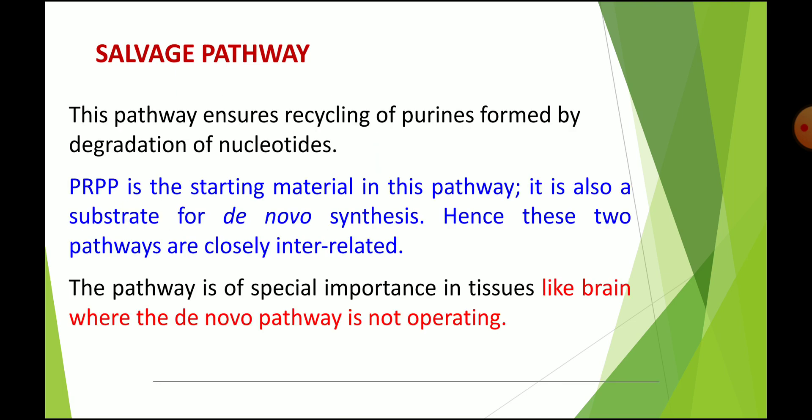This pathway ensures the recycling of purines formed from degradation. The main substrate here is PRPP, which contains ribose phosphate. PRPP is the starting material in this pathway and is also a substrate for de novo synthesis. Hence these two pathways are always interrelated. The salvage pathway and the de novo synthesis of purine nucleotides are all interrelated.